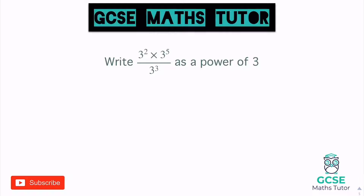So whenever I've got a question like this, I just like to tidy up whatever's on the top before looking at the bottom. So let's tidy up what's on the top. We have three squared times three to the power of five, so we can add the powers there — we get three to the power of seven on the top — although we're still dividing that by three to the power of three.